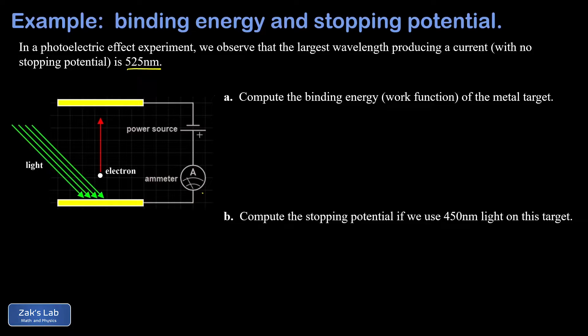The way to look at it is photons with a wavelength of 525 nanometers have the minimum required energy to rip electrons off that metal target. That's called the binding energy of that material. That's also known as the work function.